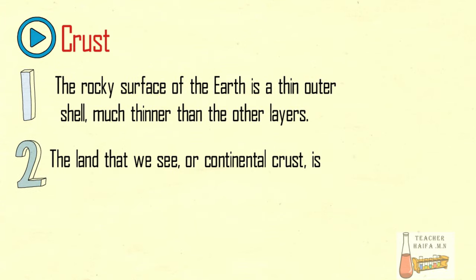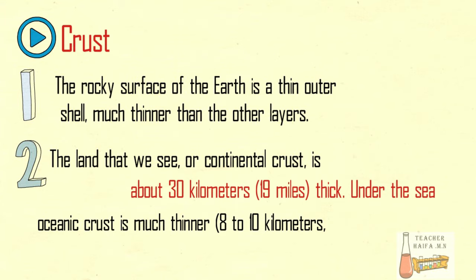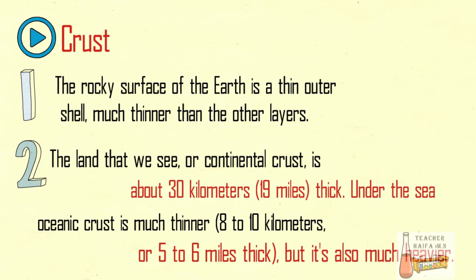The land that we see, or continental crust, is about 30 kilometers thick. Under the sea, oceanic crust is much thinner, 8 to 10 kilometers or 5 to 6 miles thick, but it's also much heavier.